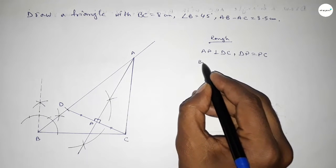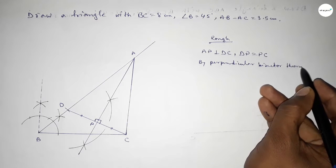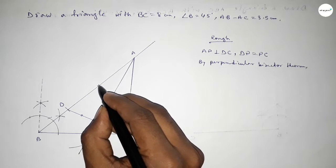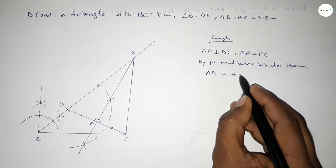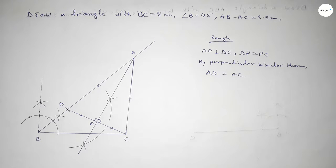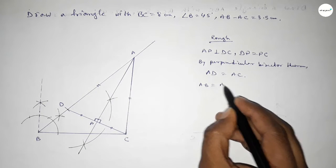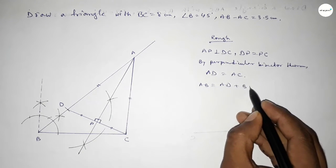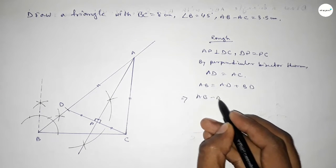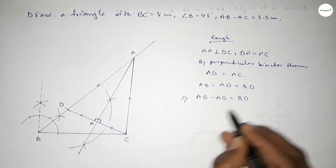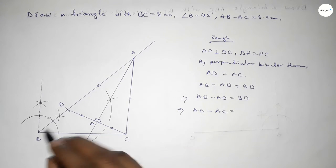By the perpendicular bisector theorem, we can say that the lengths AD and AC are equal, so AD equals AC. Now we can write AB equals AD plus BD. This implies AB minus AD equals BD, and since AD equals AC, we get AB minus AC equals BD.